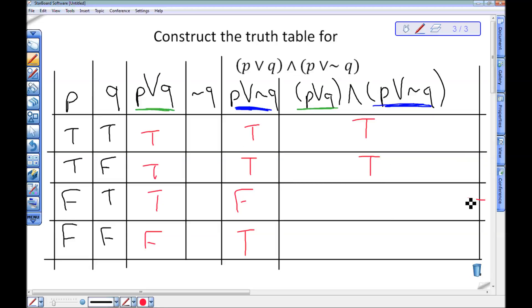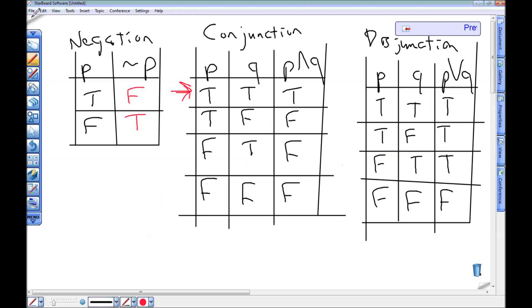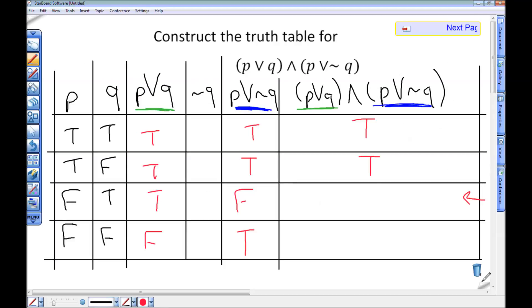Looking at the third row, I have true and false. True and false appears right here in my truth table. And that says it's false. So I'm going to put an F here.